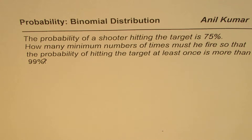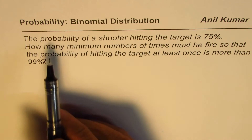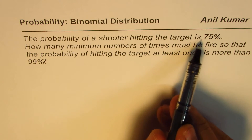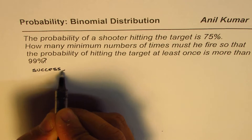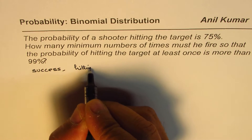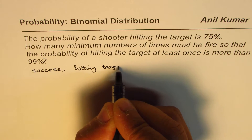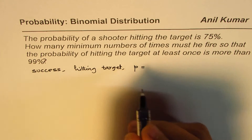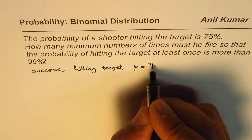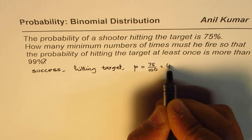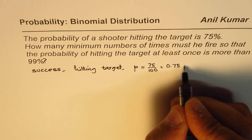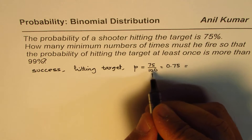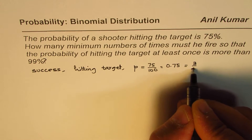You can pause the video, try it out, and then look into my suggestions. We'll make a couple of assumptions. When we say the probability of the shooter hitting the target is 75 percent, we'll call that a success. So success is hitting the target, and its probability, lowercase p, is 75 percent — that means 0.75, or equivalently 3 over 4 as a fraction.